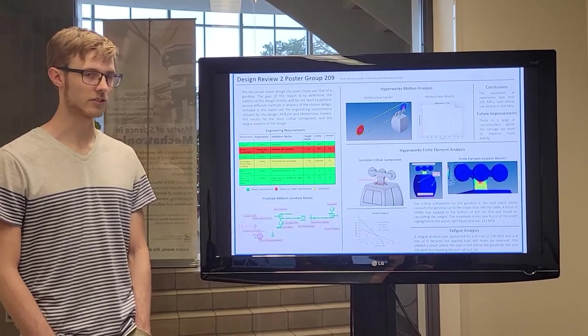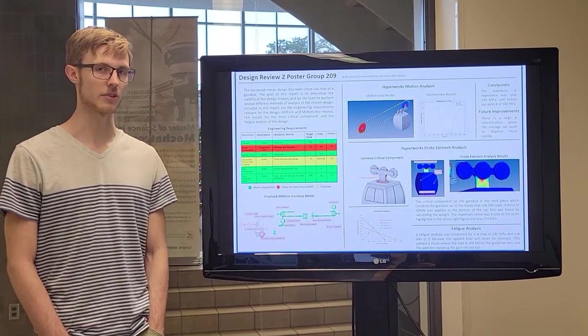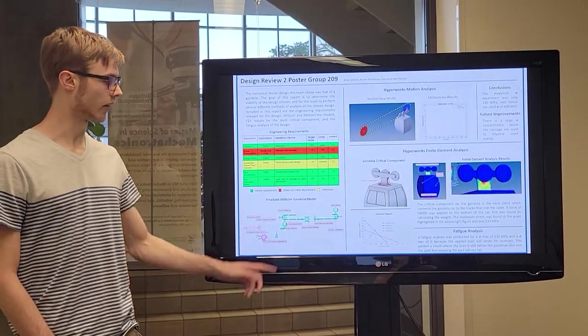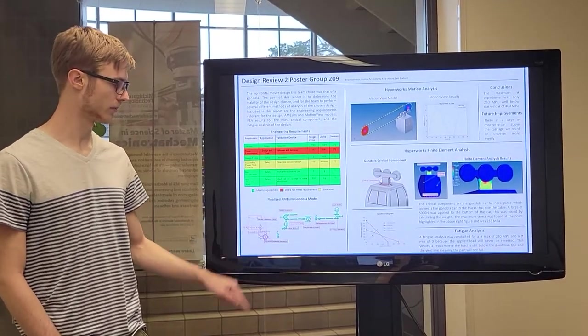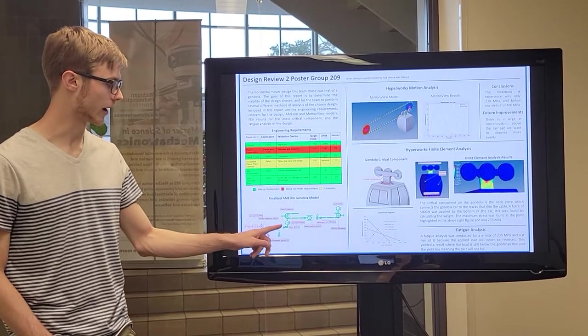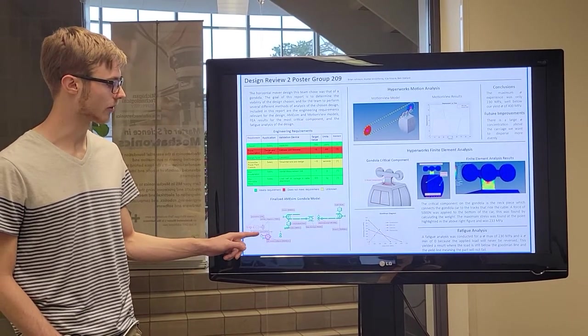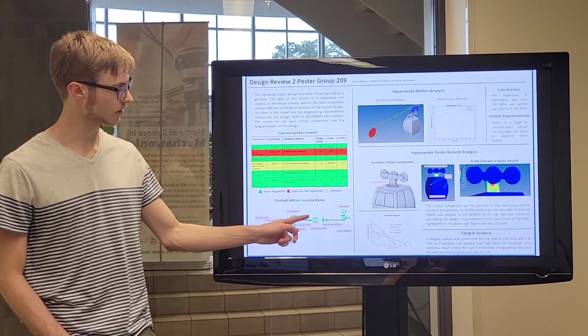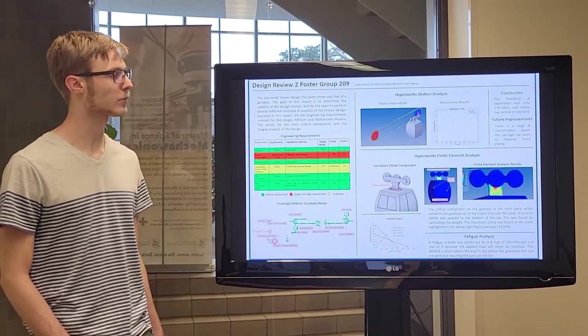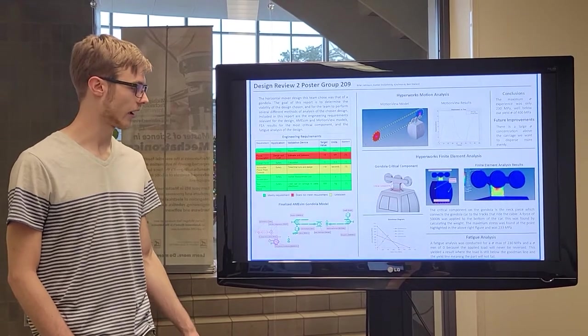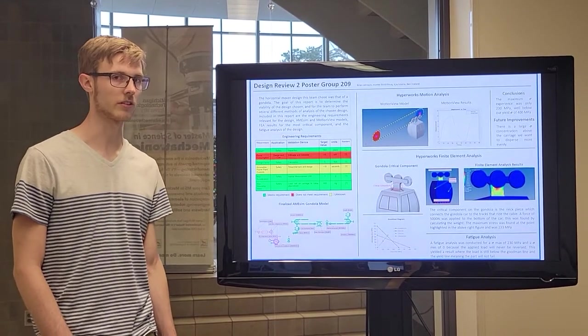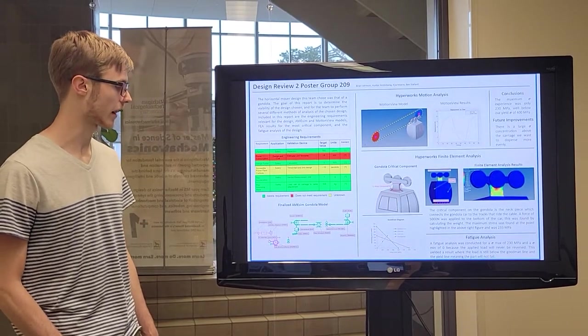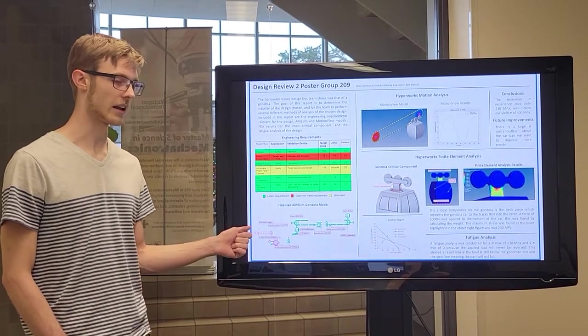The first method of analysis our team used was an AIMSIN model. The AIMSIN model consisted of a mass, rope, and sheave system, a gearbox, a DC motor, and a PID control loop. For the mass and sheave system, the mass represents the gondola car and also has a displacement sensor attached to it. This displacement sensor provides the feedback loop in the PID loop.